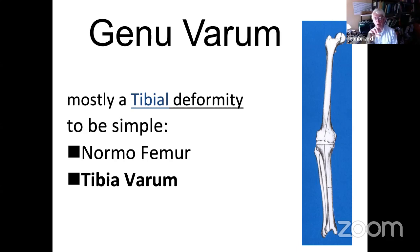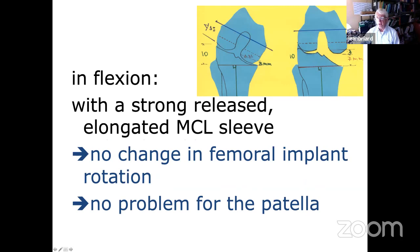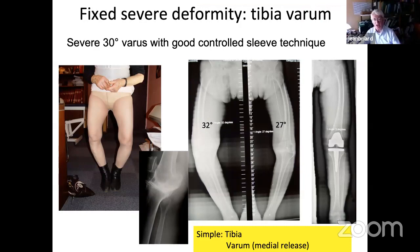First, we look at tibial deformity — like in genu varum, where you have a normal femur and tibia varum. Tibial deformity is not so difficult. You can perform a medial release with a good sleeve technique and bring the joint line perpendicular, achieving good correction in extension. It's rare to need an HTO for severe tibia varum. In flexion, you elongate the medial sleeve, so with a strong release and elongated MCL sleeve, there will be no change in femoral implant rotation — perfectly stable, no patella tracking problems.